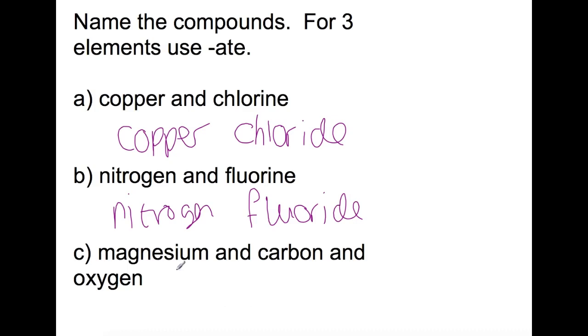For this last example, we have three elements. So magnesium stays as it is, and the end of carbon we put on ATE. This represents the oxygen which is present.